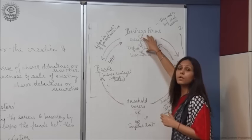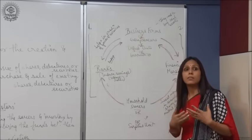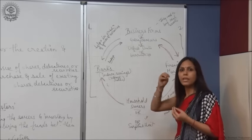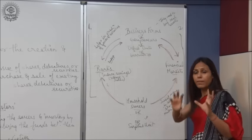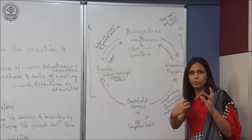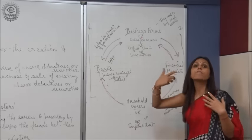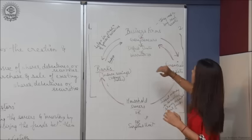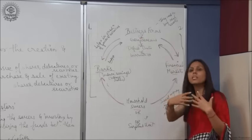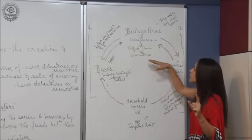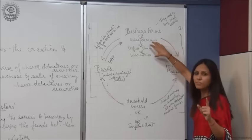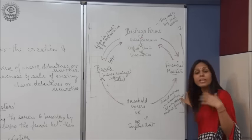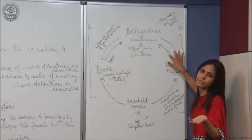These business firms require money to purchase real assets — plant, machinery, land — and they invest that borrowed amount to increase their wealth. First, they raise money through banks and financial institutions. Second, business firms or deficit units raise money by issuing shares, debentures, or any kind of securities in the financial market.